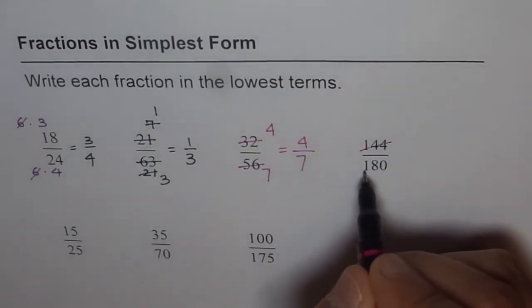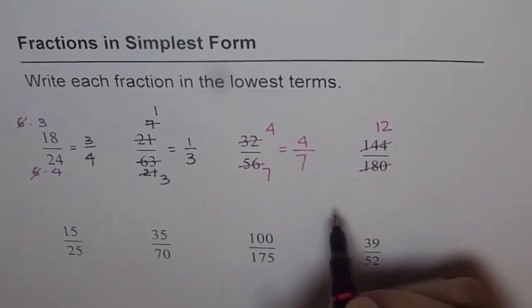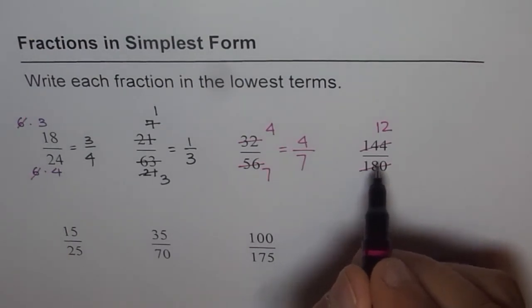So we can write this as, we can divide both by 12. 12 times 12 is 144. And 180 divided by 12 gives us 15.